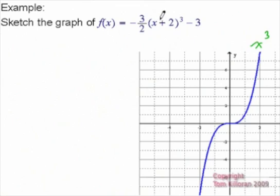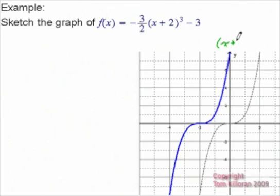The first thing I want to take care of is the plus 2 here. Now, remember, the plus 2 is going to take the graph opposite of what you think because it's inside parentheses. So it's going to move it 2 to the left. All right, so now we have x plus 2 all cubed as our graph.